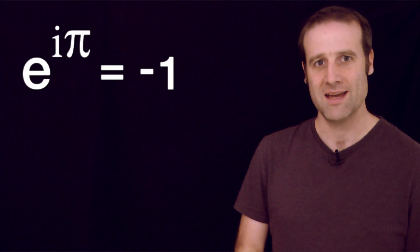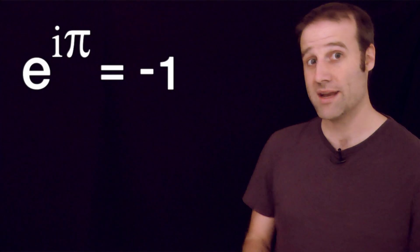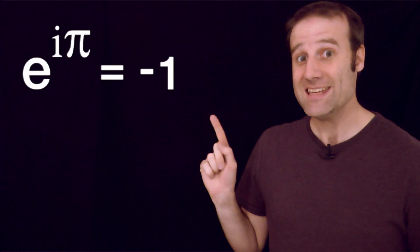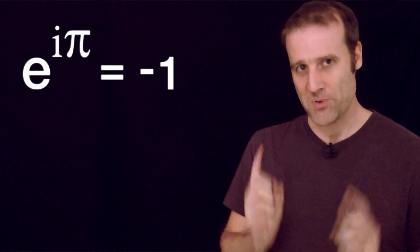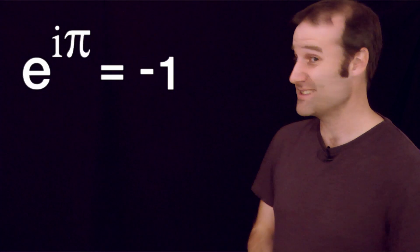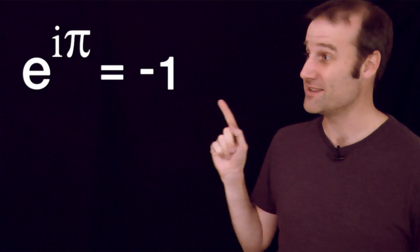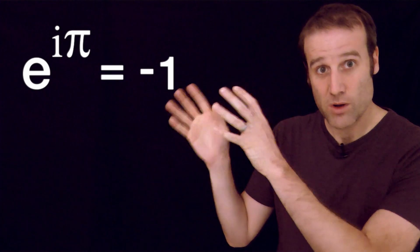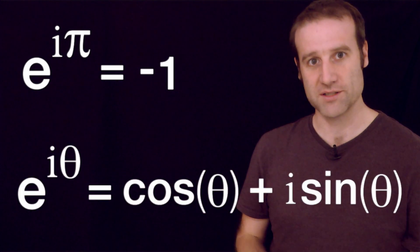e to the i pi just equals negative 1. Euler's identity is amazing, don't get me wrong, I think it's incredible. But I believe we can do a lot better. In fact, even Euler's identity, I tend to think of it not like this, as one specific case, but as Euler's formula.